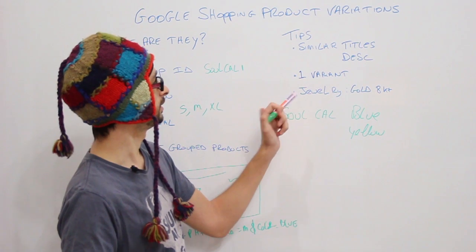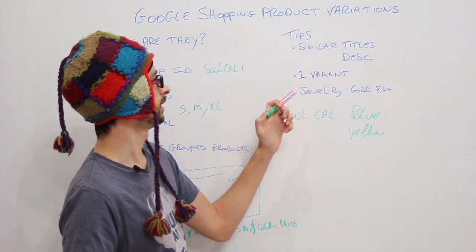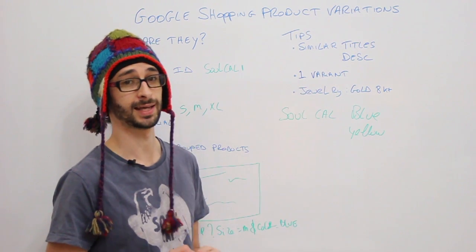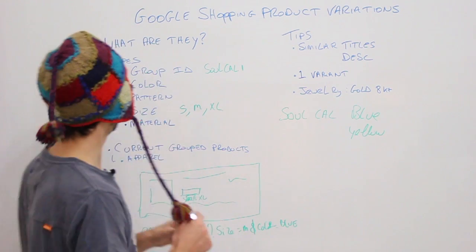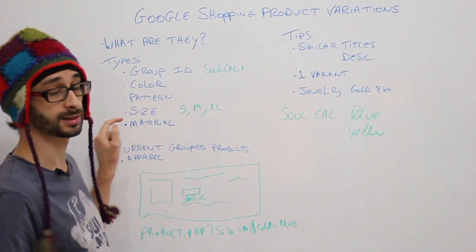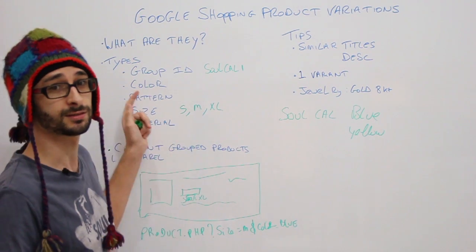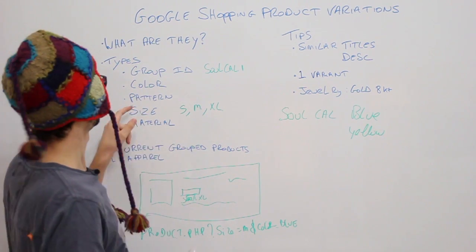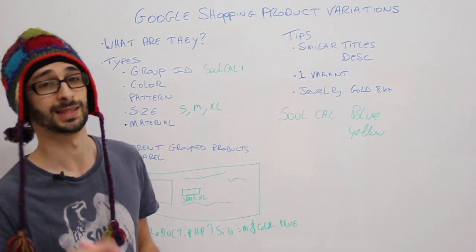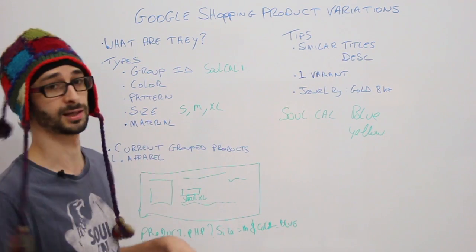What you also need to make sure is that you have at least one variant added. What that means is we have the color, pattern, size, and material. If we assign a group ID, we need to at least fill in one of the four. If we don't fill in the color, we need at least to fill in the pattern, size, or material.